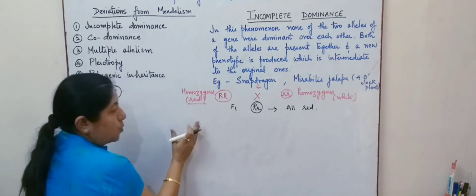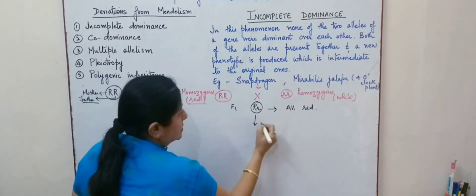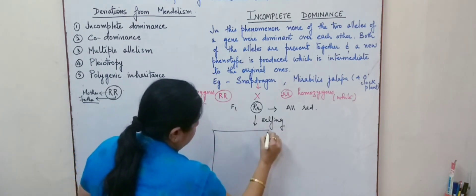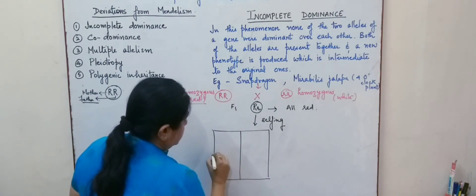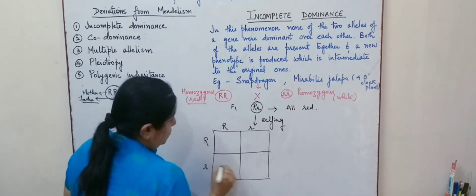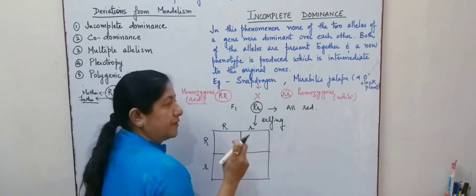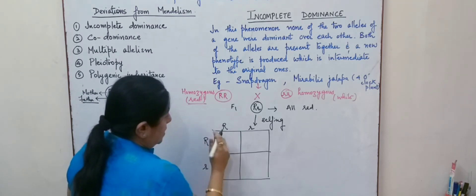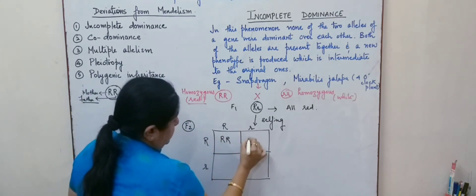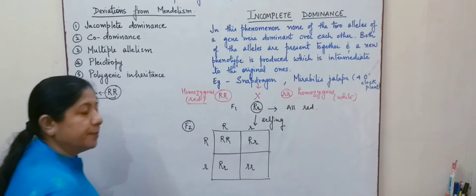This was following the normal Mendelian order. When this F1 generation was selfed, it produced gametes, and arranging these gametes within the Punnett square, we get the combinations for the F2 generation. Capital R is the dominant gene and small r is the recessive gene for the trait, that is, flower color.